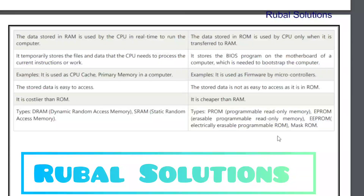Types of RAM: DRAM — Dynamic Random Access Memory, and SRAM — Static Random Access Memory. Types of ROM: PROM — Programmable Read-Only Memory, and EEPROM — Electrically Erasable Programmable Read-Only Memory.